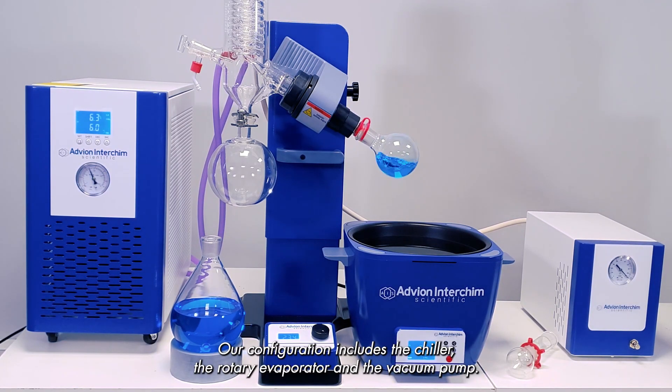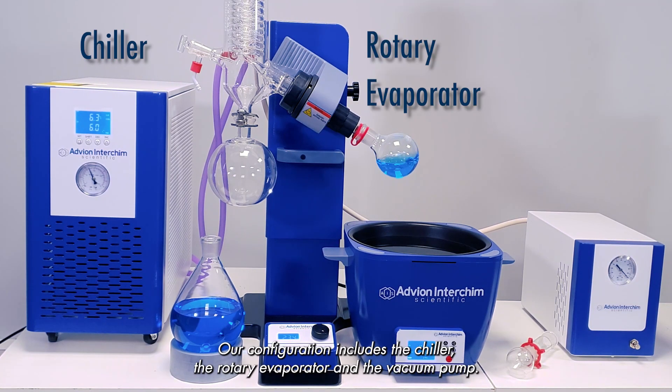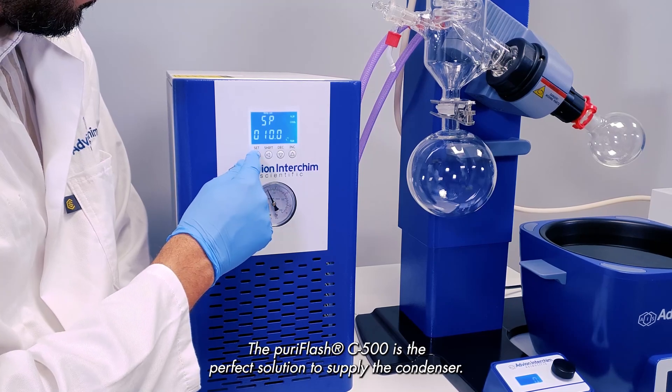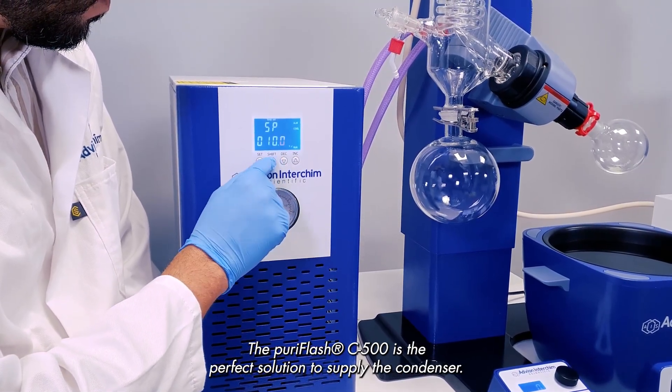Our configuration includes the chiller, the Rotary Evaporator and the vacuum pump. The Puriflash C500 is the perfect solution to supply the condenser.